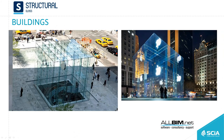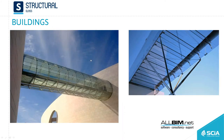This is the Apple Store from New York on 5th Avenue, which is actually the entrance — the store is underground. It is a glass cube that has ribs: the columns are made of structural glass, the beams as well, and so are all the panels.